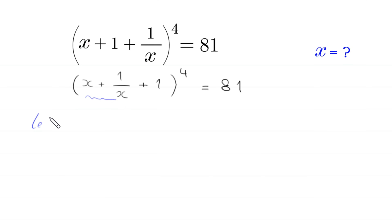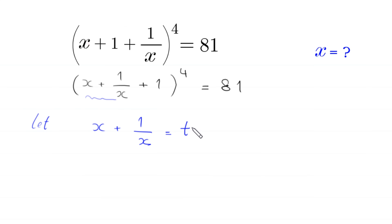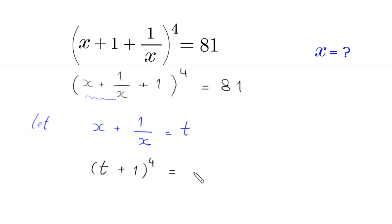Let x + 1/x = t. So this equation will become (t + 1)^4 = 81.